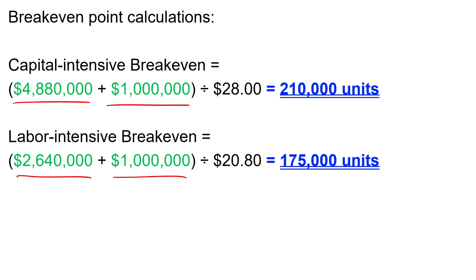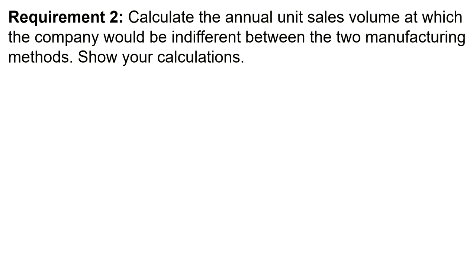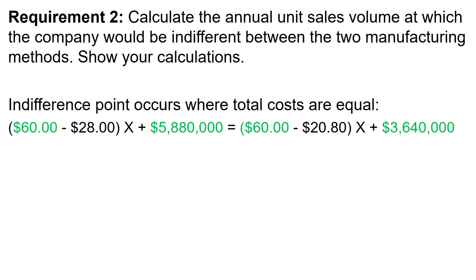Requirement two: calculate the annual unit sales volume at which the company would be indifferent between the two manufacturing methods. When we're looking for indifference, the revenue is the same under each method at the same sales level since the price is identical. So we focus on finding the point where total costs are equal — because at that quantity, total costs are equal, revenue is equal, and therefore profit is equal.